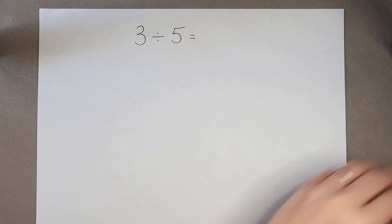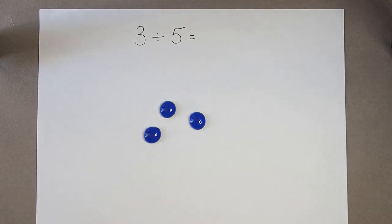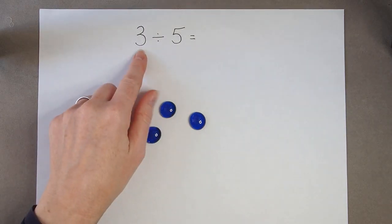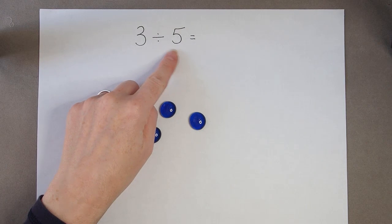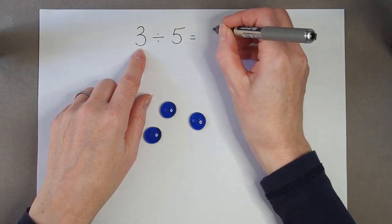And if we look at that with counters, if I've got 3 counters and I try to make groups of 5, how many groups can I make? None. I don't have enough to make a group of 5. I'm starting with 3. To make one group of 5, I would need 5. I haven't got that many.